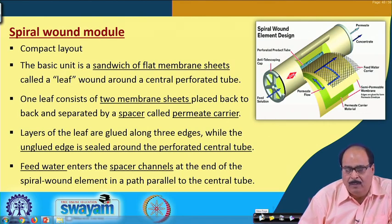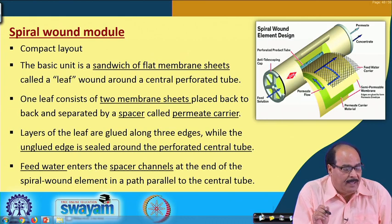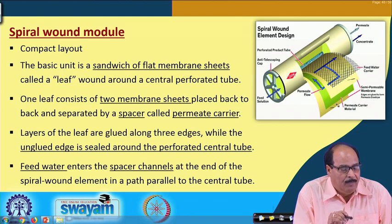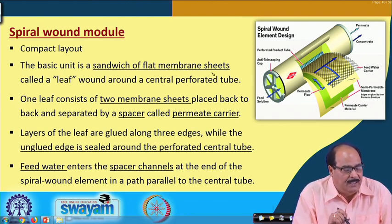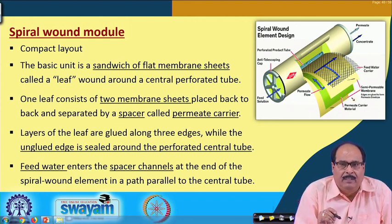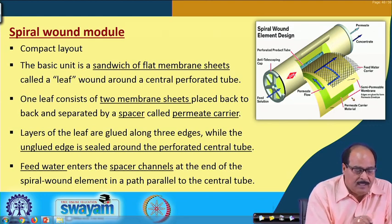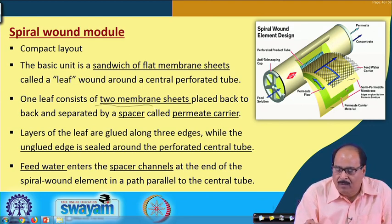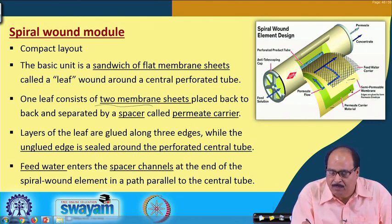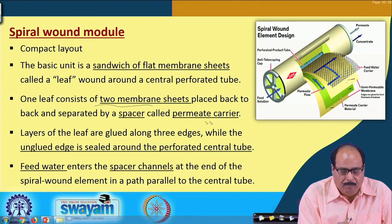Spiral wound modules are of compact layout. The basic unit is a sandwich of a flat membrane sheet called a leaf, which is wound around a central perforated tube as seen in cross-section here. One leaf consists of two membrane sheets placed back to back and separated by a spacer called the permeate carrier.